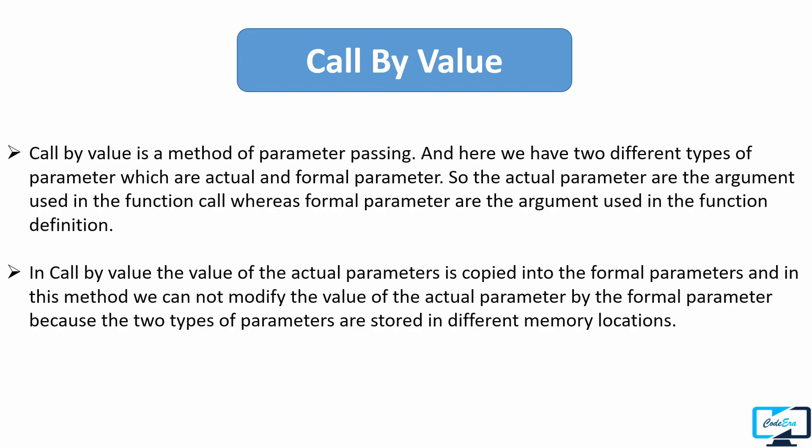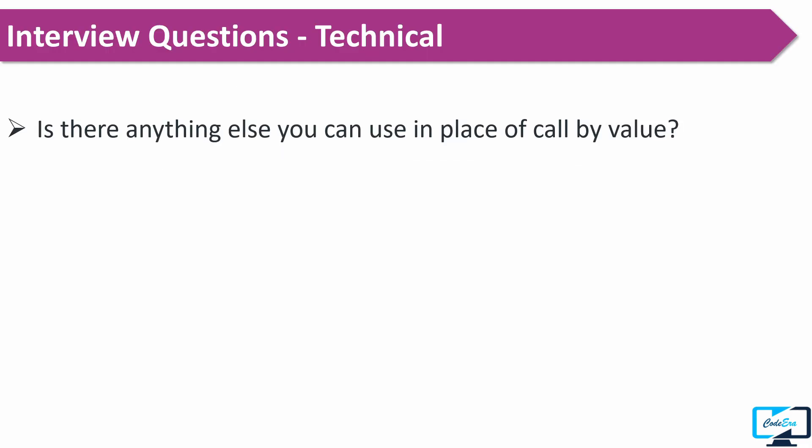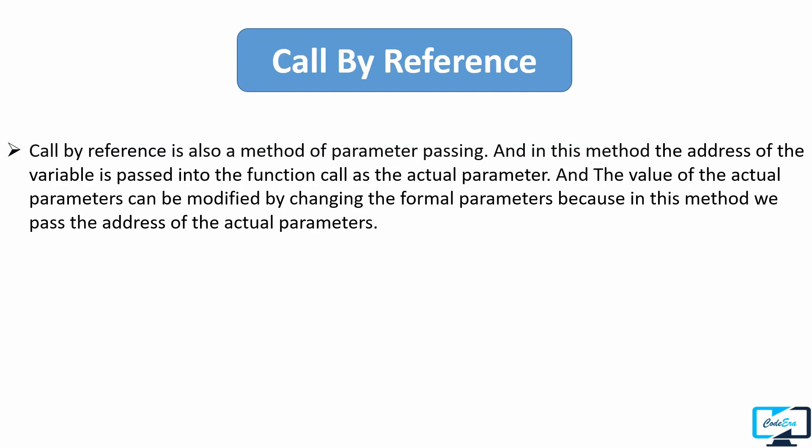The next question was whether there is anything else you can use in place of call by value. Yes, we can use call by reference, which is also a method of parameter passing. In this method, the address of the variable is passed into the function call as the actual parameter, and the value of the actual parameter can be modified by changing the formal parameters, because we pass the address of the actual parameters.